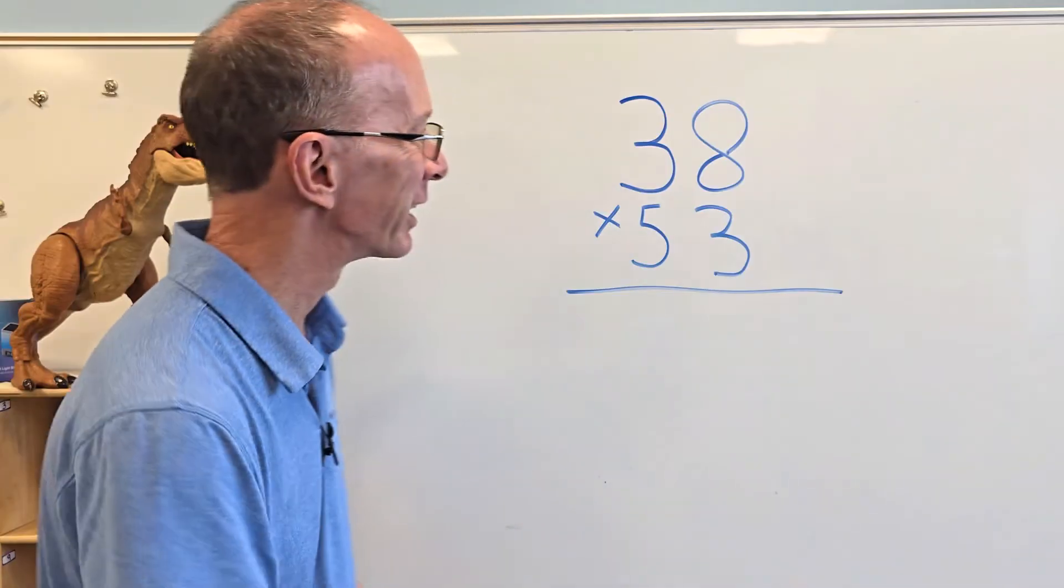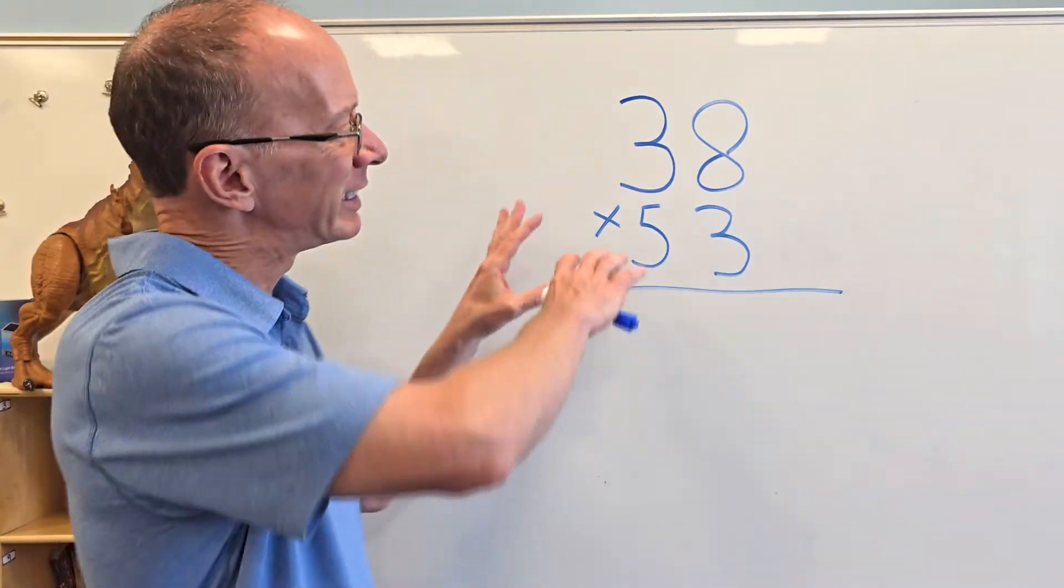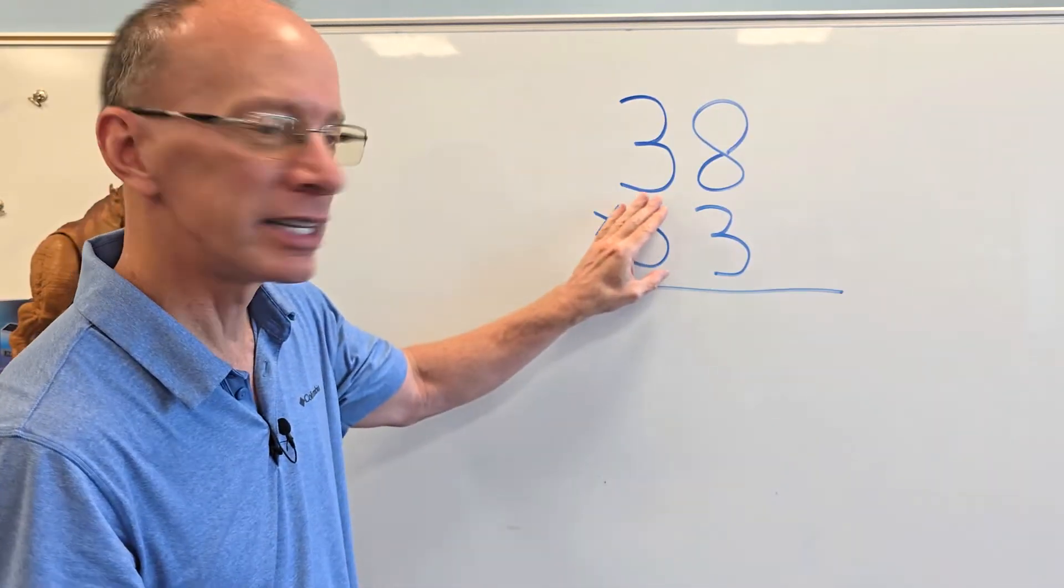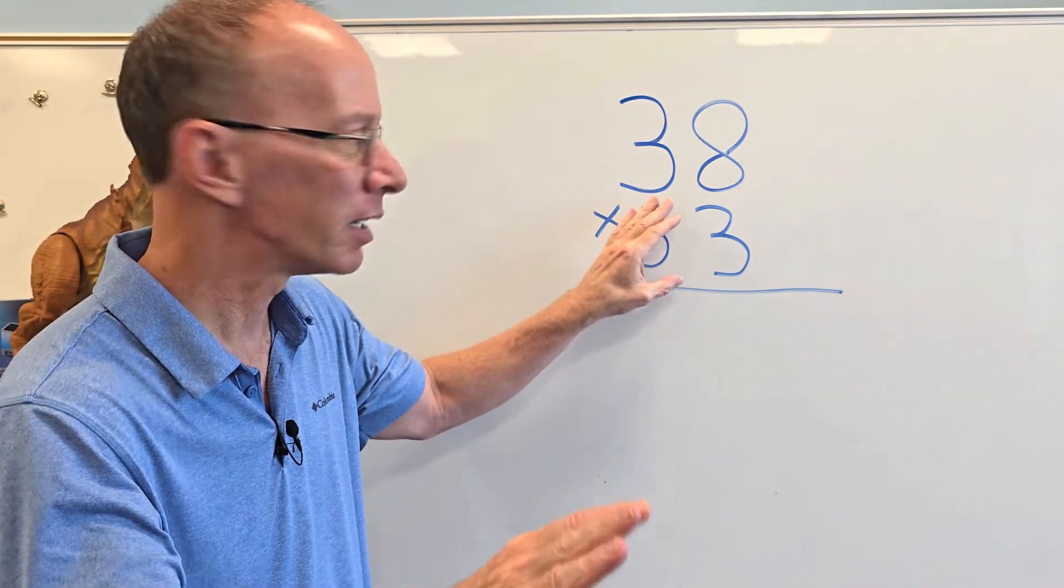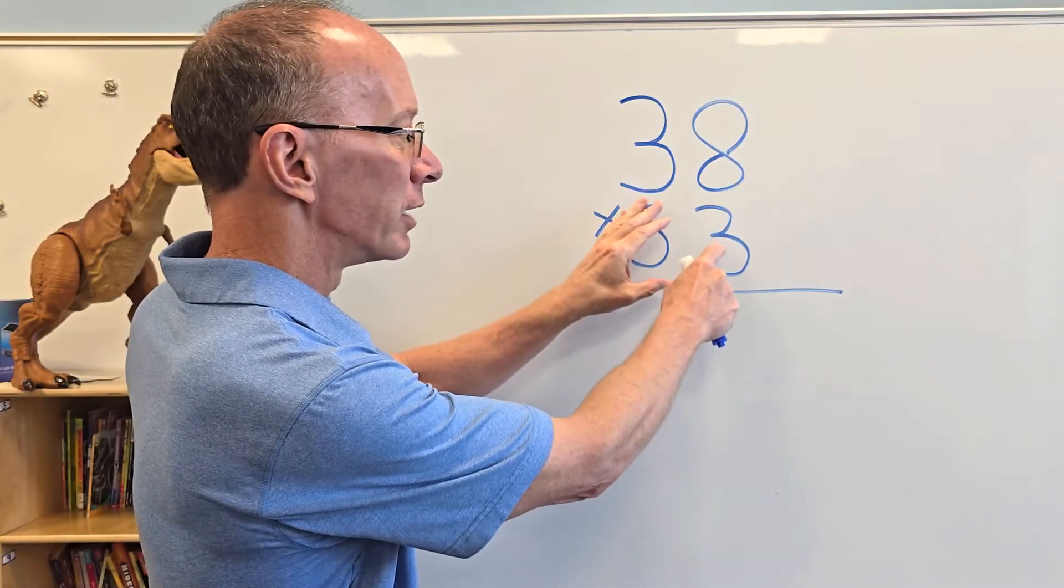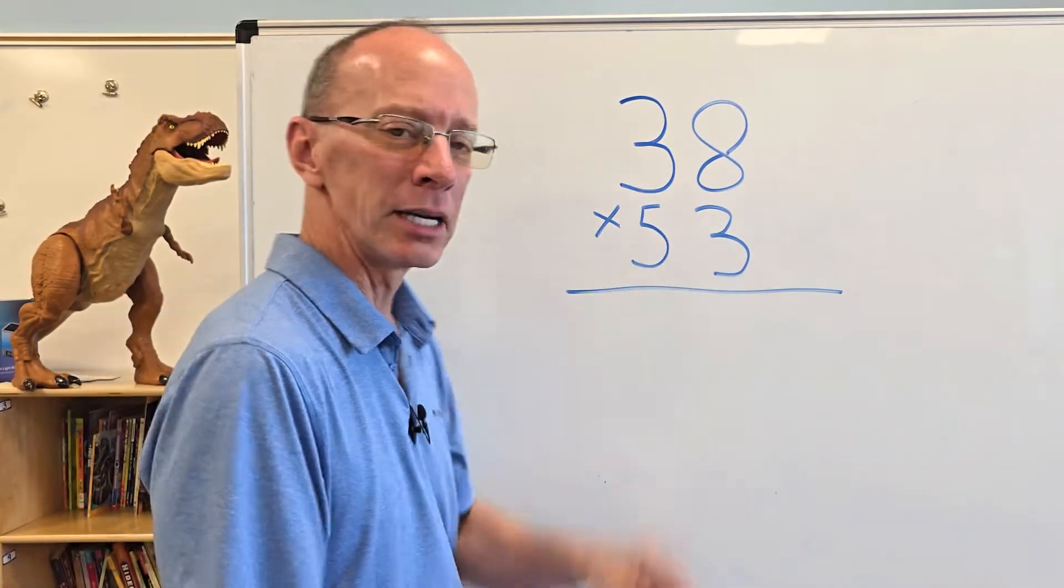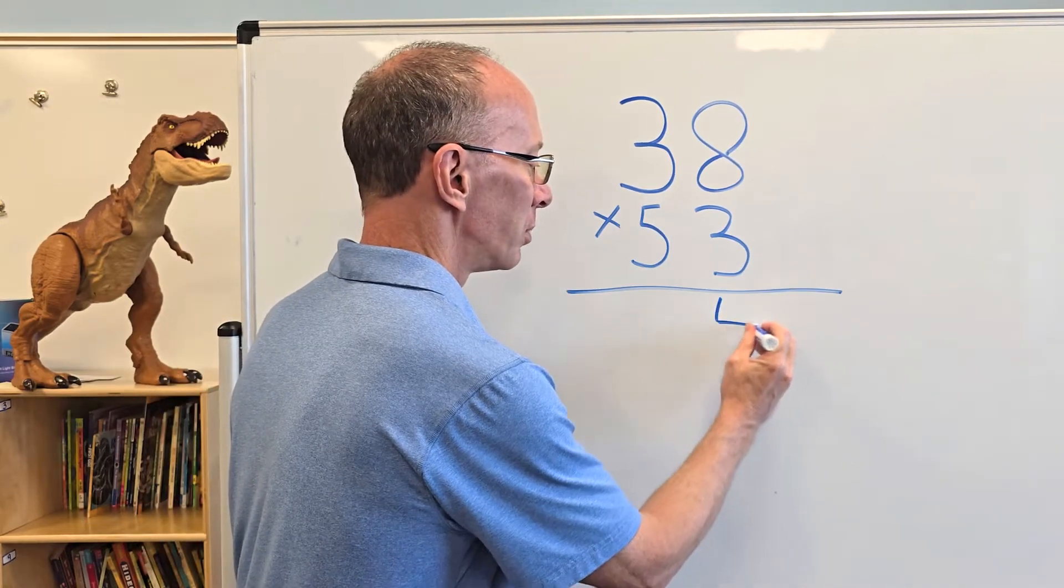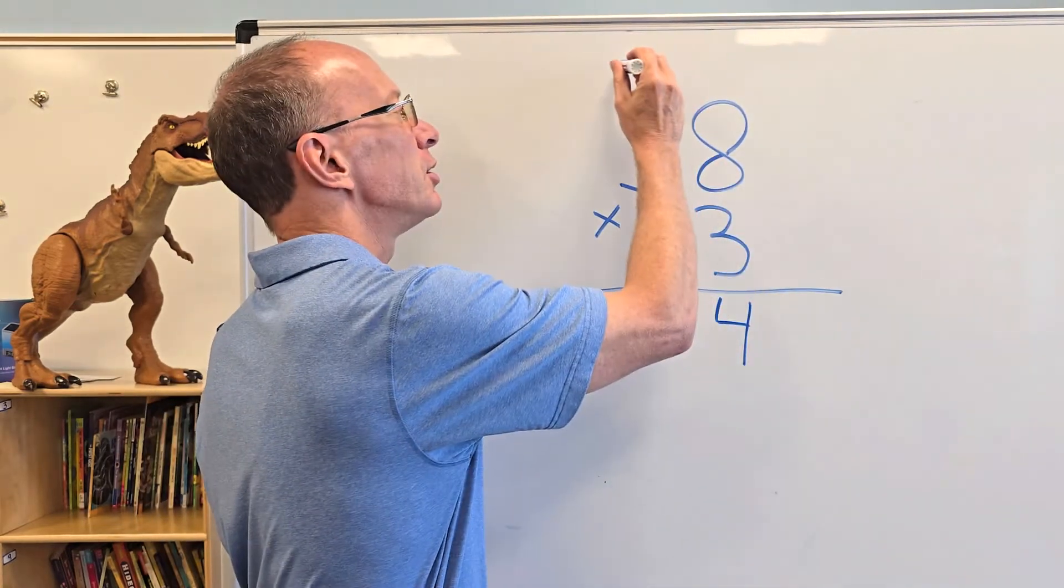All right, let's begin. First of all, when you're doing double-digit numbers like this, you can just cover this number up so it's not too scary. We're just going to work with the 3. We're going to do 3 times 8 and then 3 times 3. 3 times 8, what is it? Yeah, you're right, 24. So I put the 4 right there and I carry the 2 all the way up there.